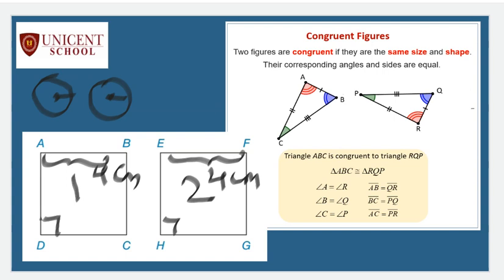But what about triangles? Triangles have nine parts altogether - vertices, angles, and sides. Do we need to use all three? Yes, indirectly we will be using all three parts, but every time comparing all nine parts is a tedious job. In mathematics we have a simple method which helps us understand and prove that two triangles are congruent.